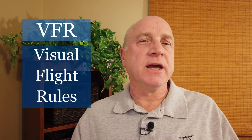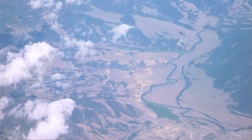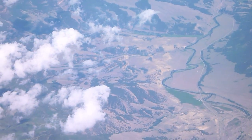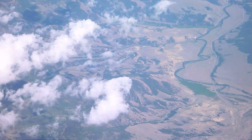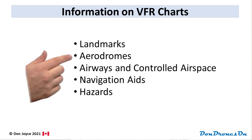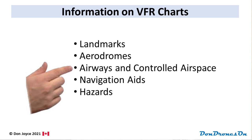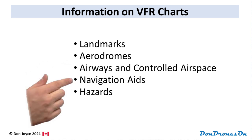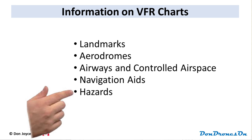VFR charts are designed for manned aircraft pilots to fly using VFR, or visual flight rules, which basically means they're flying at low to medium altitudes with good visibility. The maps are intended to provide five bits of information: landmarks such as rivers, lakes, highways, and built-up areas; aerodromes and some of their basic characteristics; airways and controlled airspace; navigational aids; and hazards such as obstructions, towers, glider areas, and restricted airspace.